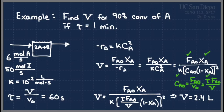That was the main example. CSTR problems make great PE exam — professional engineering exam — questions for exactly this reason: they can ask you to put reactors in series, in parallel, split flow, and so on, because so much of this simplifies to algebra. This is especially true when we get to energy balances on CSTRs, which we're going to cover next.